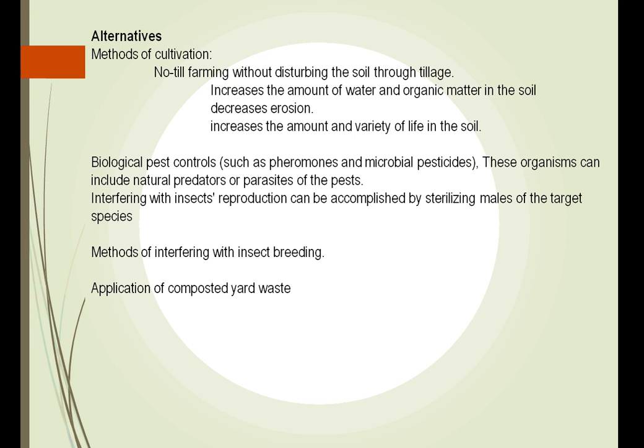We can try interfering with the insect's reproduction, such as sterilizing the males. We've tried this with malaria mosquitoes and decreased the amount of malaria. We can also use composted yard waste — all of our grass clippings put back down will decay and return nutrients into the soil.